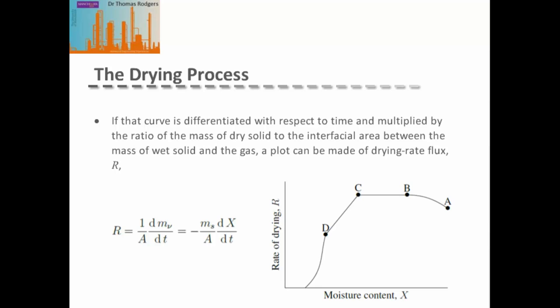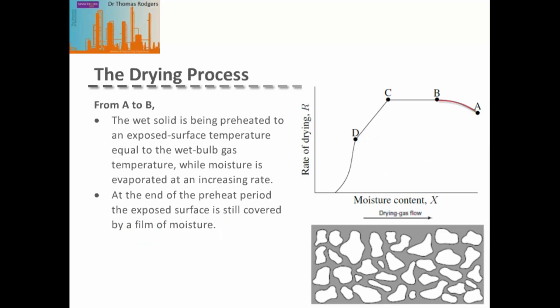From the drying rate curve, the drying process passes through four key regions: A to B, B to C, C to D, and D to the end. The region from A to B is the preheating region, where the wet solid is heated up to the wet bulb temperature of the gas, while moisture is still evaporating at an increasing rate. At the end of this preheating period, the exposed surface of the solid is still completely covered by a film of moisture.